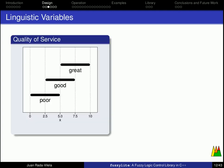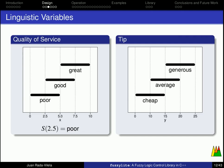Having said that, the quality of service is a linguistic variable, whose range goes between 0 and 10, and it is divided in three overlapping terms, namely poor, good and great. Thus, if you rank the quality of service as 2.5, the term associated to that is poor. The tip is another linguistic variable, whose range goes between 0 and 25, be it percentage or any other unit of your choice, and it is divided in three overlapping terms, namely cheap, average and generous. And more interestingly, if the tip value is 17.5, the terms associated to that is average and generous, but it is not cheap.